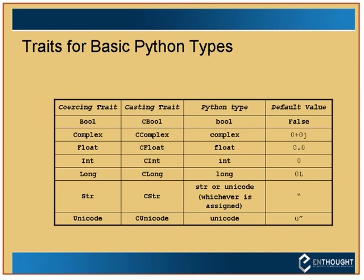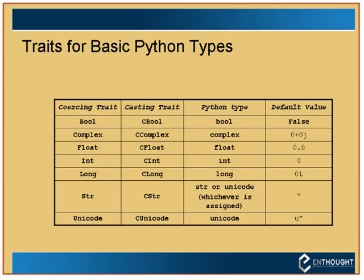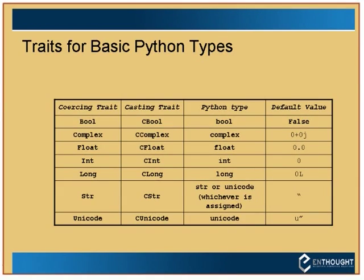There are many different kinds of traits — you can define your own, and there are plenty already built. The core set corresponds to basic Python types: Bool, Complex, Float, Int, Long, Str, Unicode — all available as traits you import from inthought.traits.api. A table shows the corresponding Python type and default values for each.